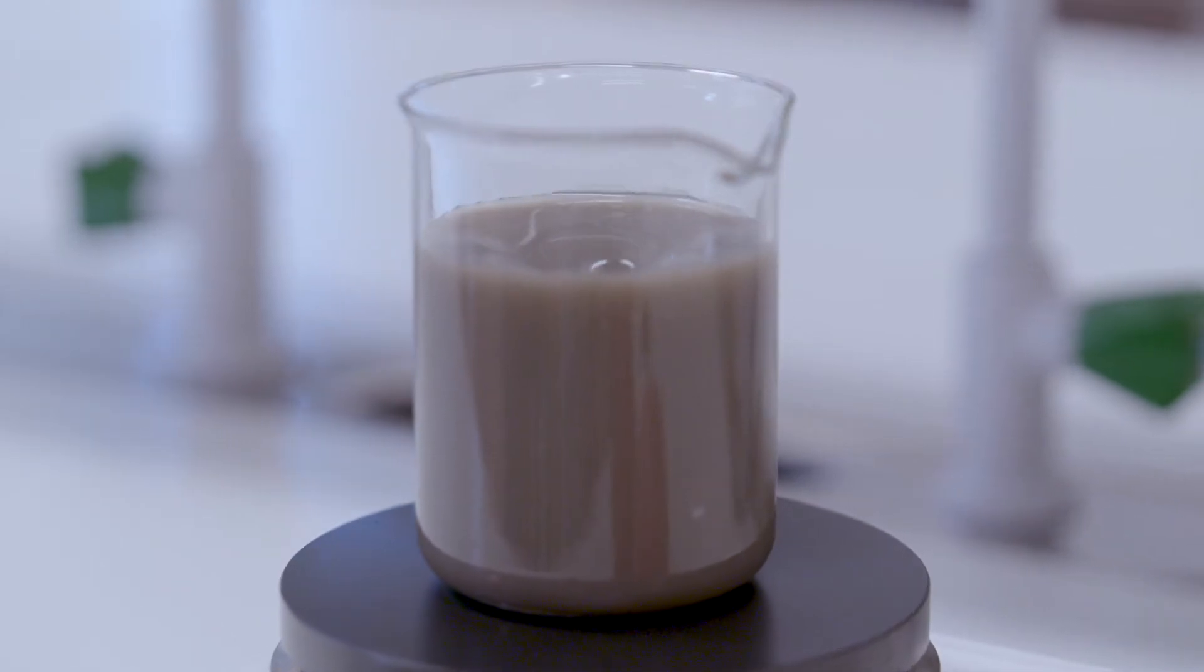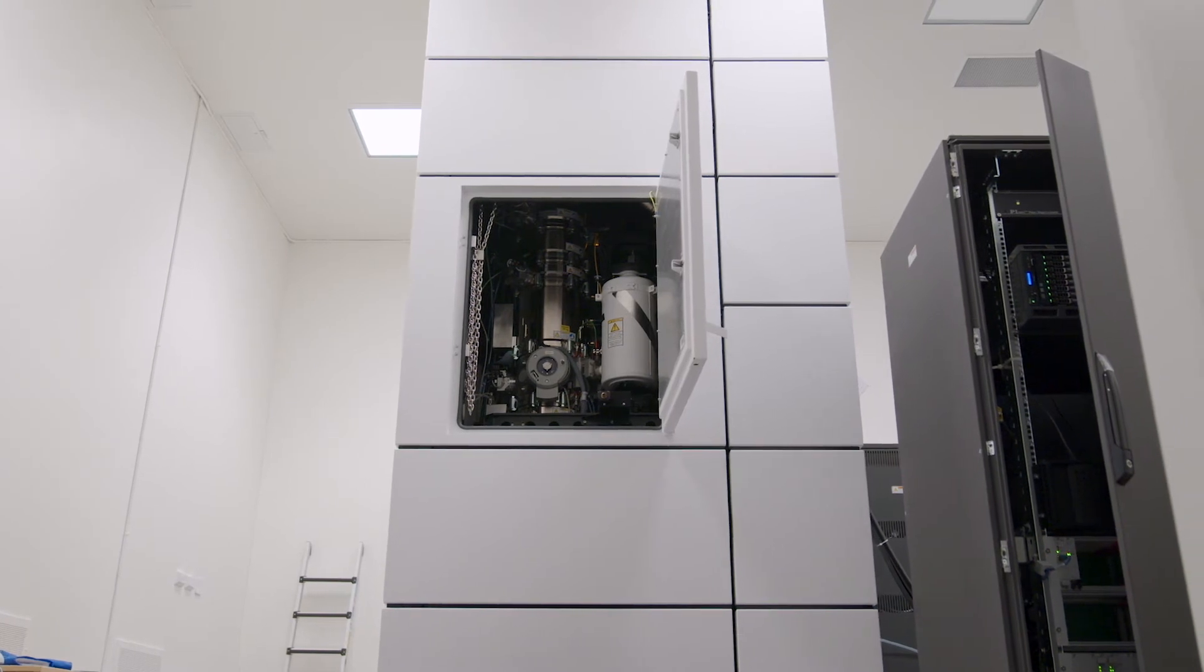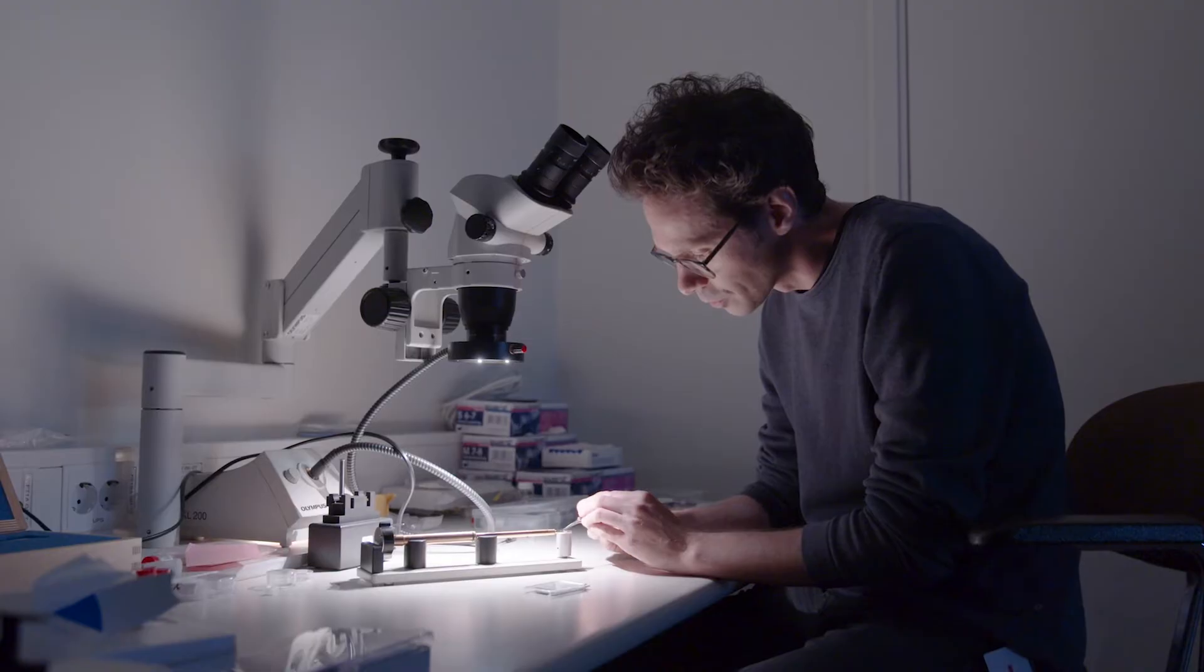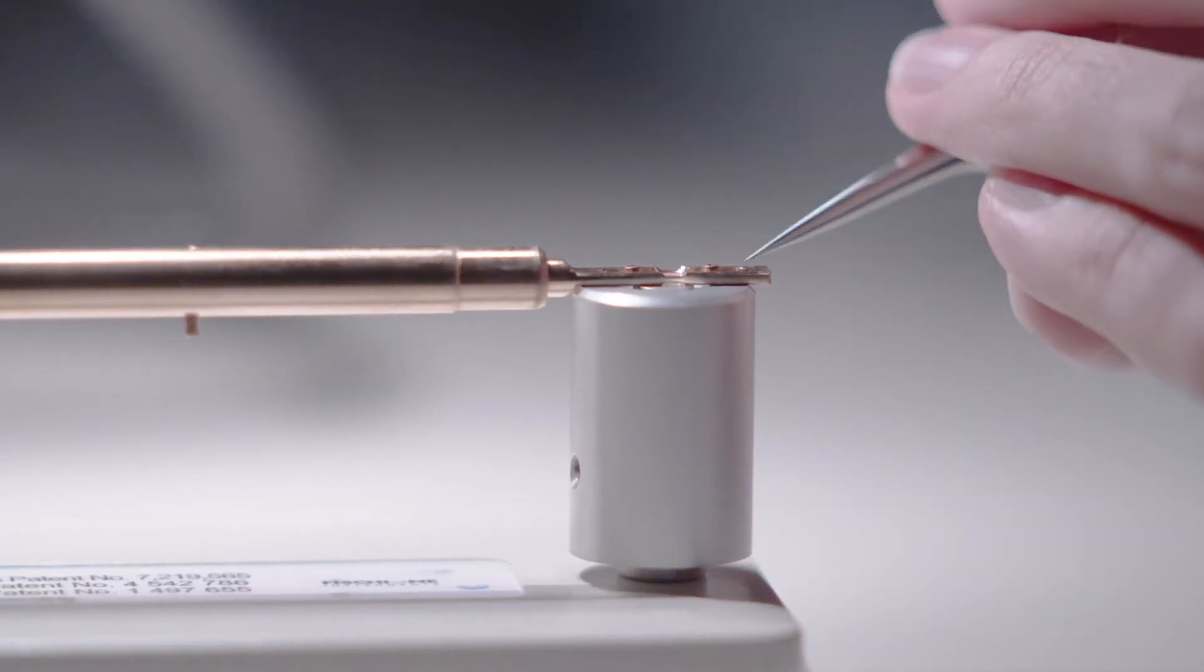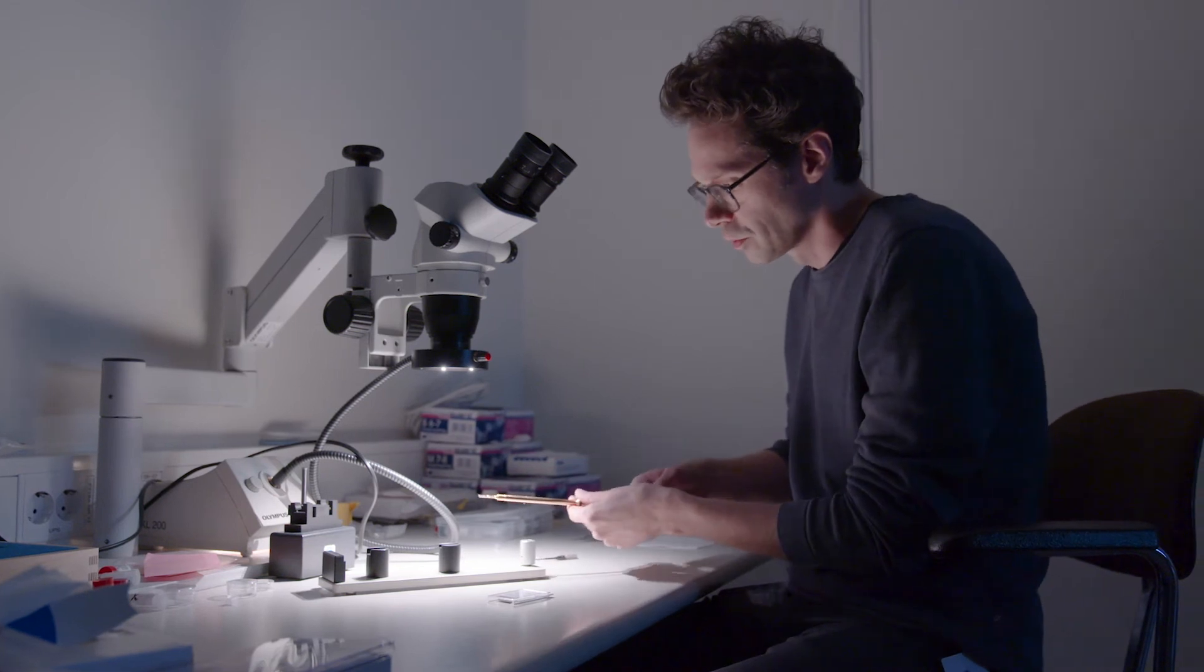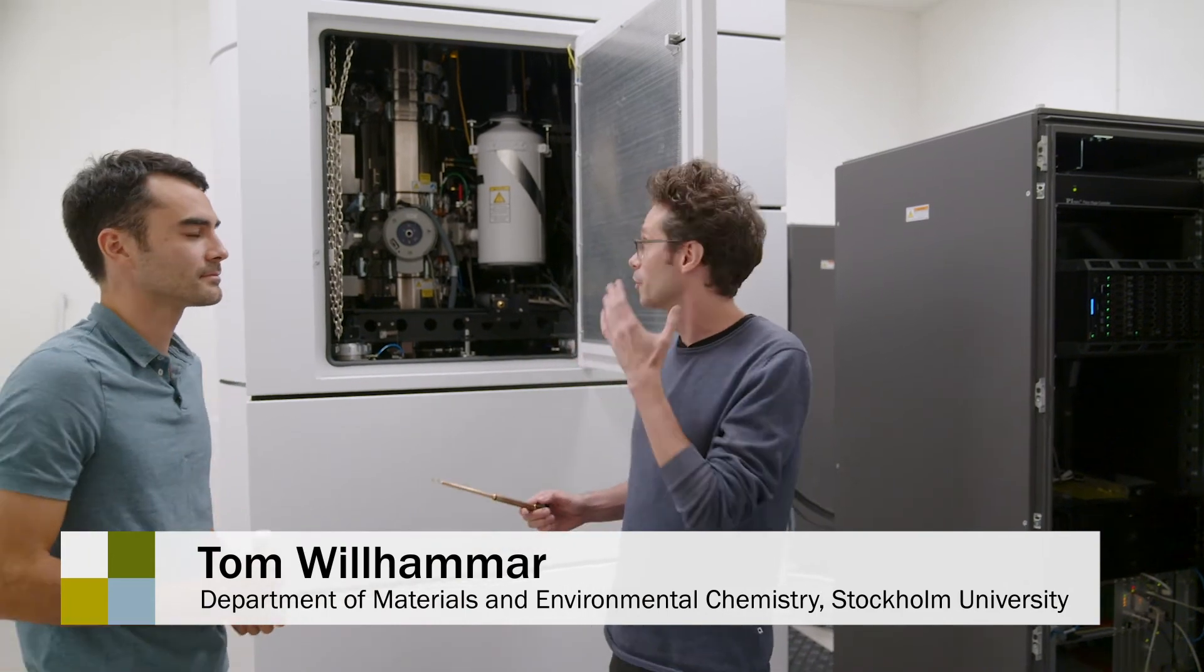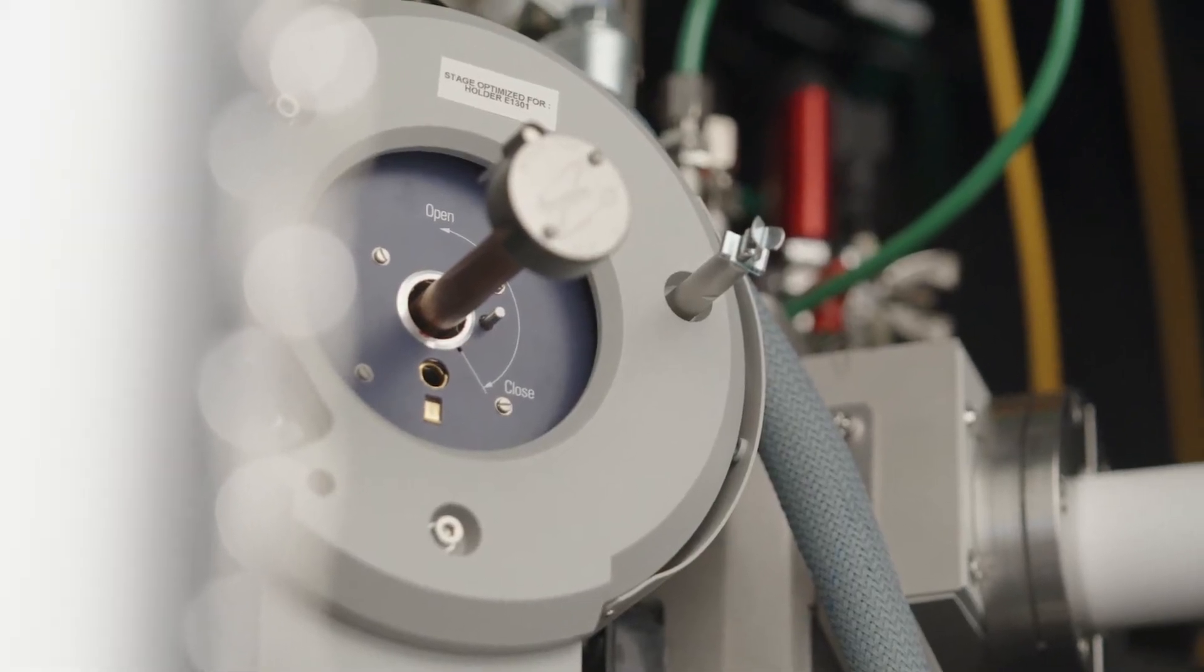To be able to study the material at an atomic level, the researchers use an electron microscope. In order to look at it in the transmission electron microscope, we now need to place it in a sample holder. So now we are ready to go. So this transmission electron microscope is at the top level in the world, and it really helps us to study these crystalline materials.